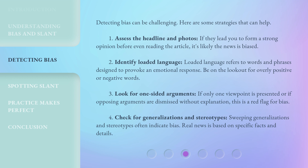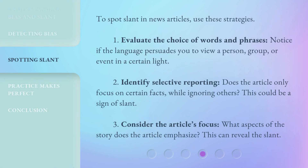4. Check for generalizations and stereotypes. Sweeping generalizations and stereotypes often indicate bias — real news is based on specific facts and details. To spot slant in news articles, use these strategies. 1. Evaluate the choice of words and phrases; notice if the language persuades you to view a person, group, or event in a certain light. 2. Identify selective reporting — does the article only focus on certain facts while ignoring others? This could be a sign of slant.